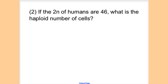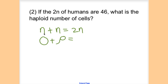Let's work on another problem. If the 2N of humans is 46, what is the haploid number? In basic math: N plus N equals 2N. So we have egg plus sperm giving the full number of chromosomes. We know 2N equals 46, therefore the haploid N is 23 plus 23. On an exam they might say: N represents the haploid number — how many chromosomes are in the haploid cells, or in the N number of cells? Therefore N always equals 23 in humans.